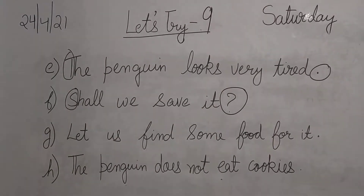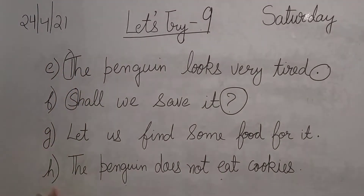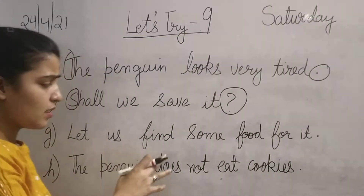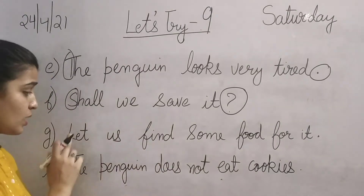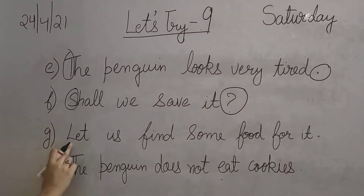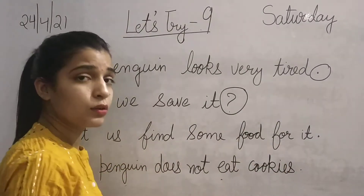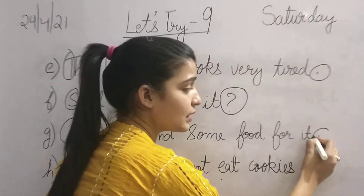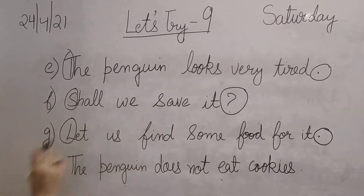The next sentence is: 'Let us find some food for it.' They are talking about someone — ki uske liye khana dhundne do. The first letter is L and it is capital, then circle it. And at the end there is a full stop — circle it. There are two punctuations in this sentence.